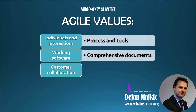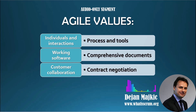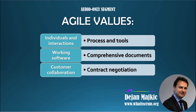Value Three: customer collaboration over contract negotiation. In the old way of doing things, customers were mainly involved at the start during contract talks and then at the very end of the project — that led to misunderstandings because customer needs might change during the project, and waiting until the end meant the final product often didn't match what they really wanted. But Agile wanted customers and collaborators to be involved all the time. As an educator, you play the customer role here — working with your students ensures that what you provide really fits their needs.